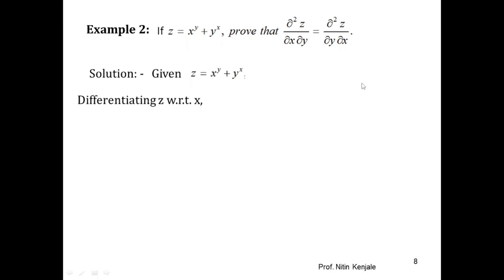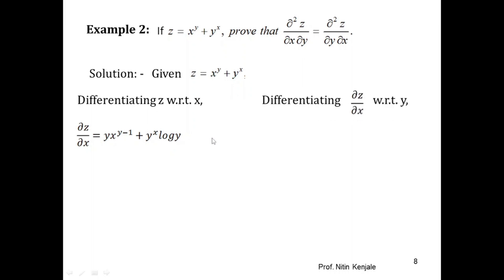Let us first differentiate z partially with respect to x, keeping y constant. So ∂z/∂x = y·x^(y−1) + y^x·log y. Note that since y is constant, we differentiate x^y as y·x^(y−1), and for y^x (a constant base raised to x), the derivative is y^x·log y. Now we differentiate ∂z/∂x partially with respect to y to get ∂²z/∂y∂x.